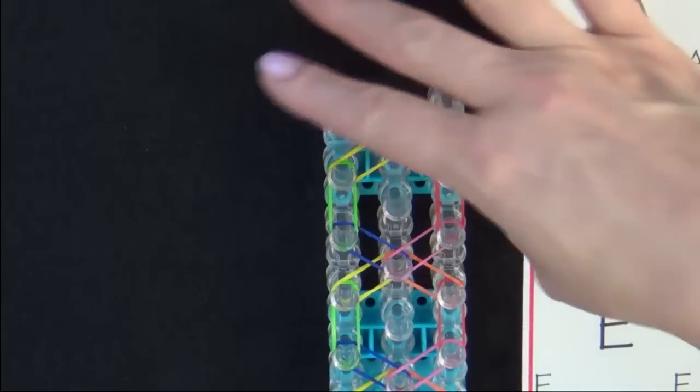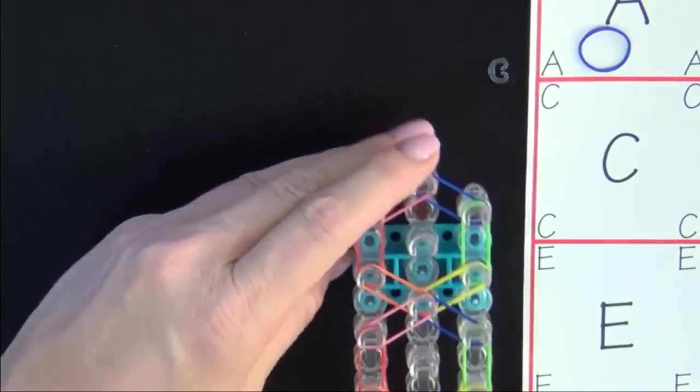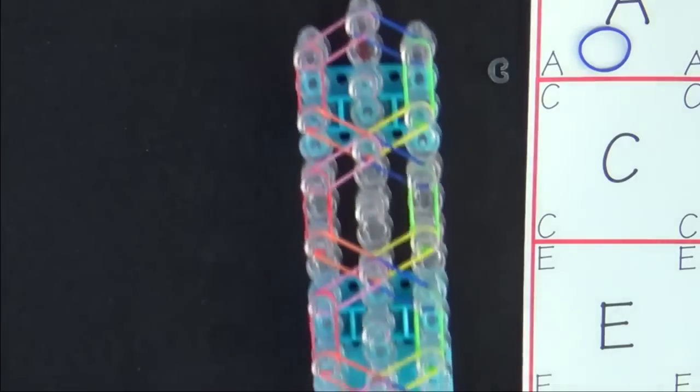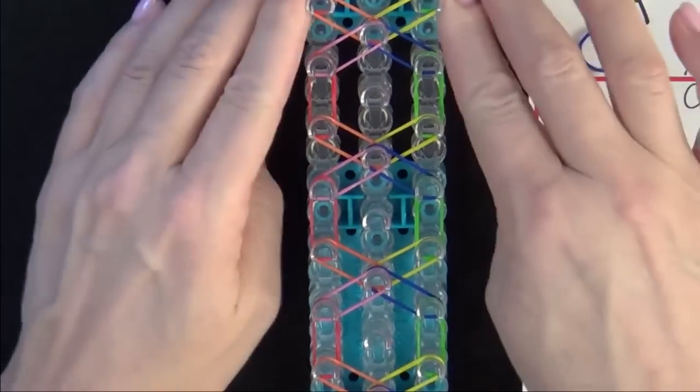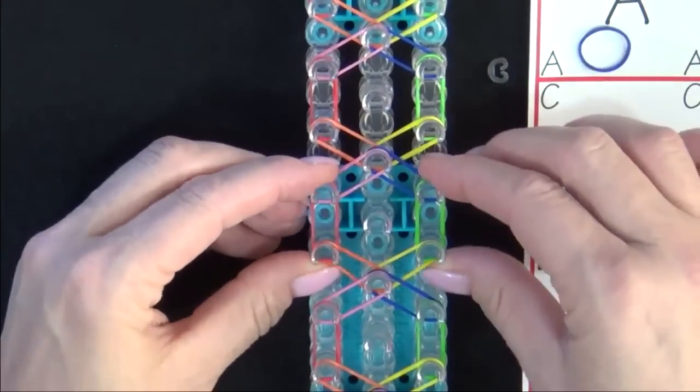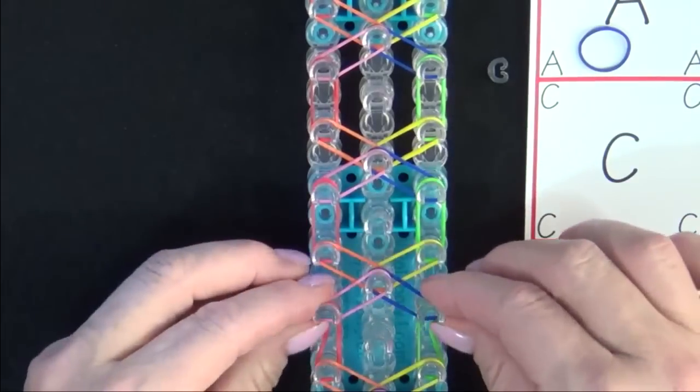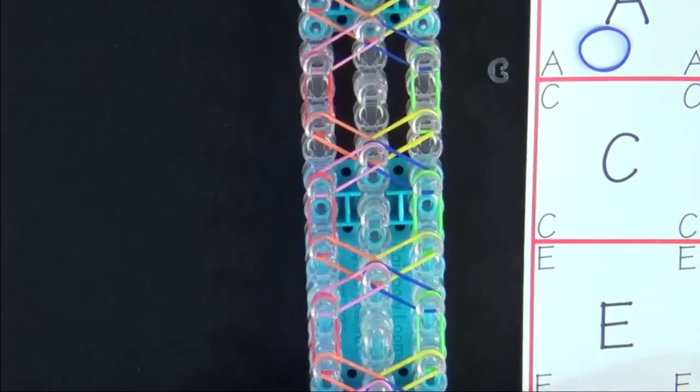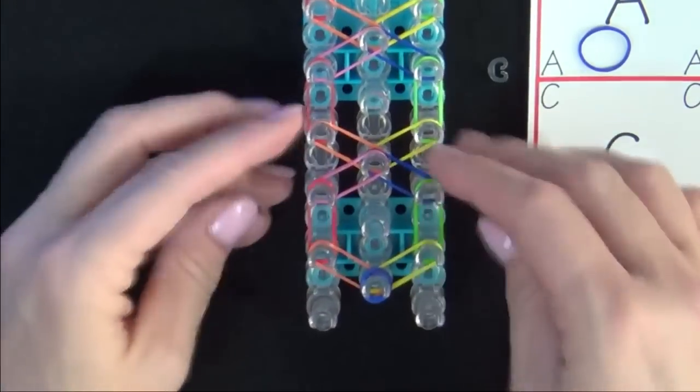Now we're ready to start looping the bands. Turn your loom around so that the red arrow is pointing toward you. This is a good time to push your bands so that they're about halfway down the pin. Because as you loop the bands, you'll be placing those on top of these bands. I'll show you how that works in just a minute.